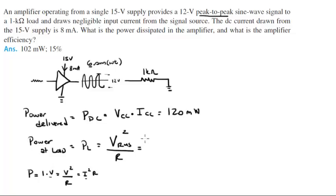So in other words, the voltage is 6 volts divided by the square root of 2, that's the voltage RMS, squared, all over the resistance of the load which is 1kΩ, and this comes out to be 18mW.